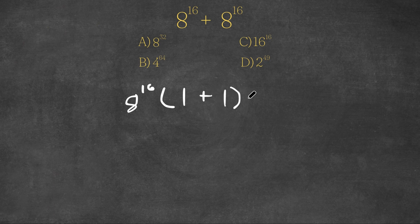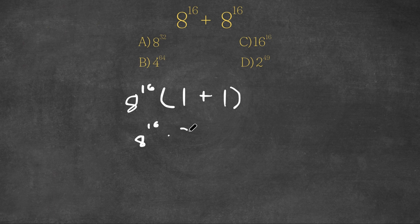So now we have 8 to the power of 16 times 1 plus 1. Now 1 plus 1, as we all know, is 2. So now we have 8 to the power of 16 times 2.